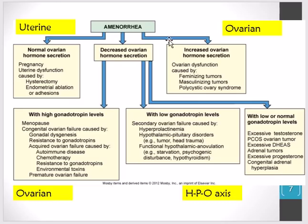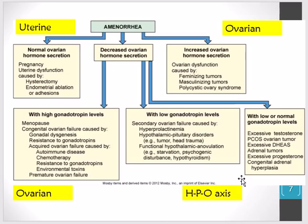With amenorrhea, something can go wrong related to the uterus, the ovaries, or the hypothalamic-pituitary-ovarian axis. With the ovaries, there can be high levels of gonadotropin or high levels of ovarian hormone secretion. The main causes of amenorrhea were discussed on the previous slide.